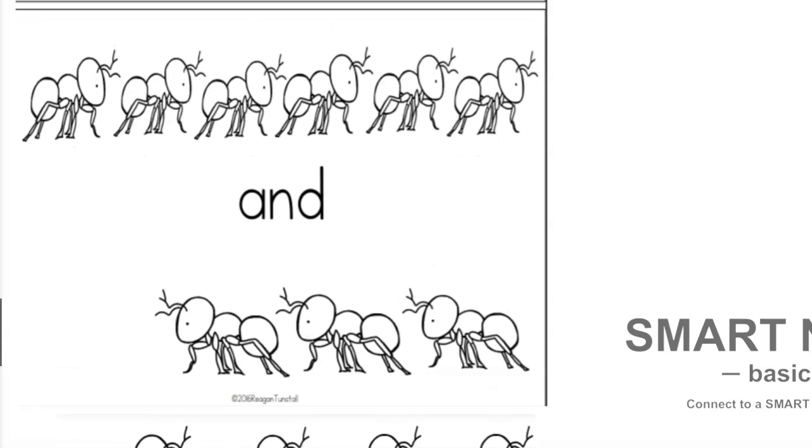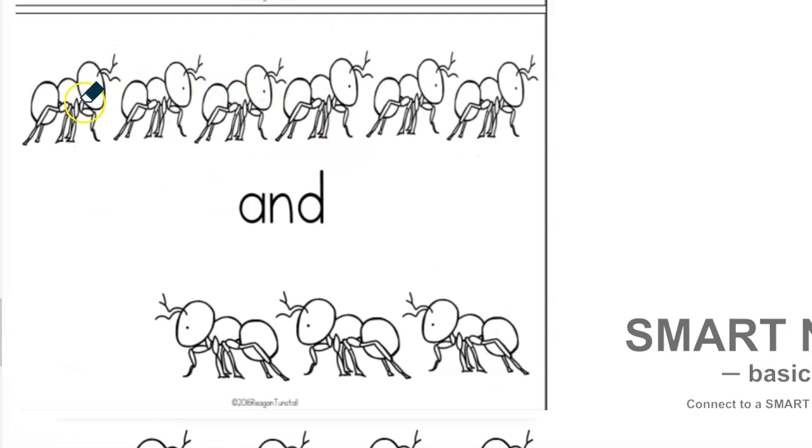All right, Paige, how many ants do I have on top? Six. Good job. Six. And how many ants do I have on the bottom? Three. Good. Six and three make what, Paige? Nine. Good job, six and three make nine.